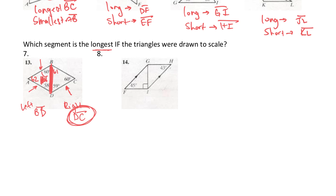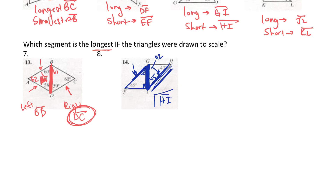For the next example, this is 90 degrees and that's 45, but these two lines are parallel. Using the Z-angle (alternate interior angles), this becomes 45 in the lower triangle, making the third angle 92 — not 90. Looking at each triangle, they share a common side, and HI turns out to be the longest side overall between the two triangles. You have to compare both triangles and determine what is bigger between them.